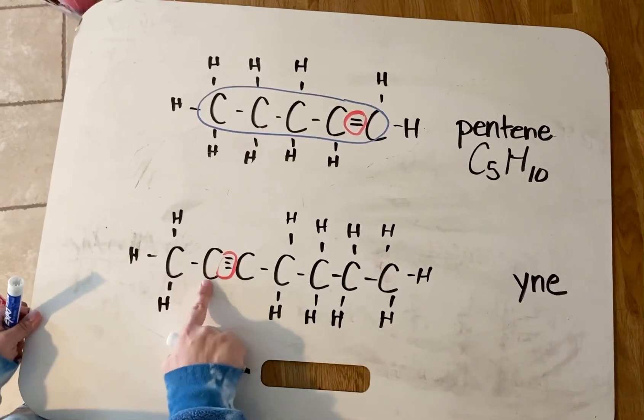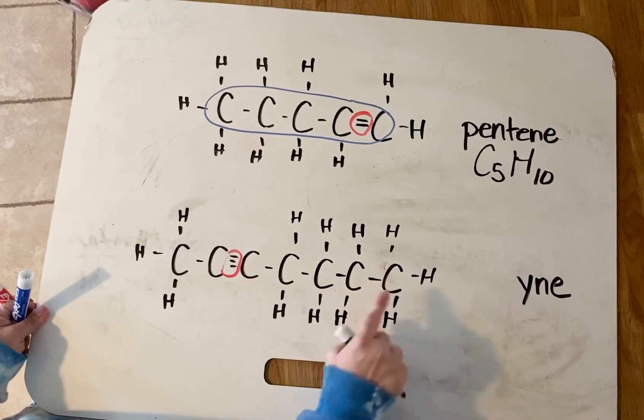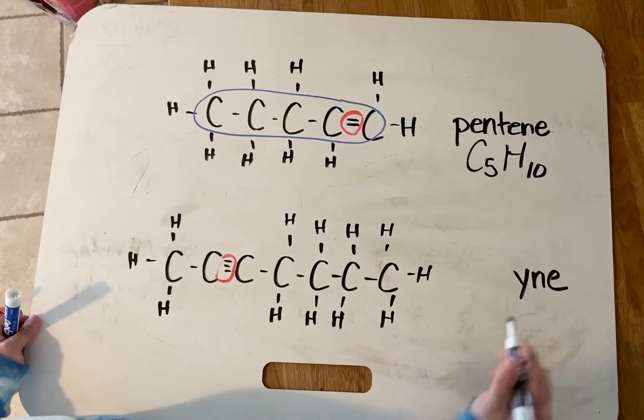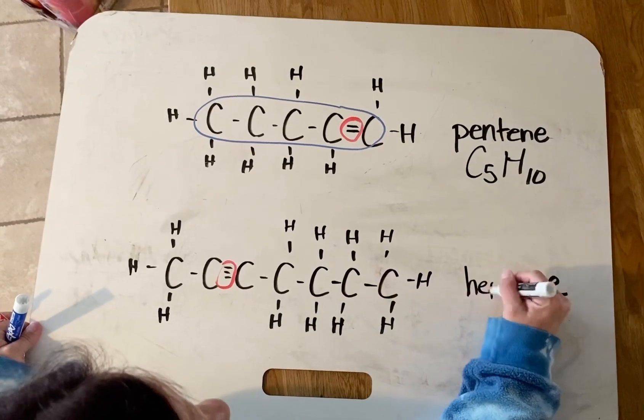Now, if I just count, I have one, two, three, four, five, six, seven carbons. Seven carbons, according to table P, has the prefix hept. So this guy's name is heptyne.